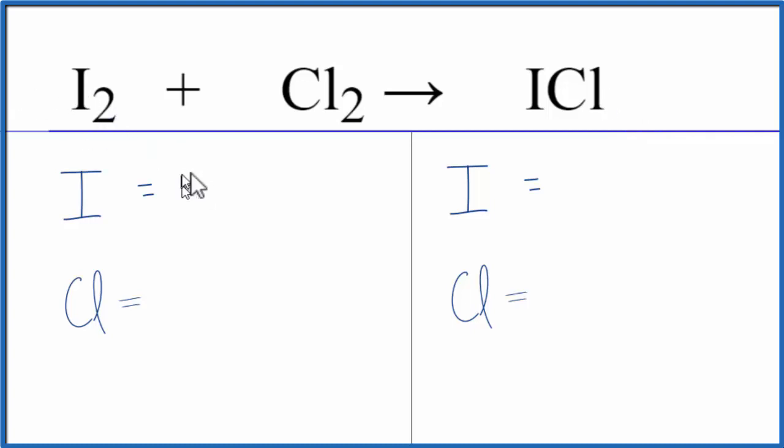So we have two iodine atoms and then two chlorine atoms. On the product side, we have one iodine and one chlorine.